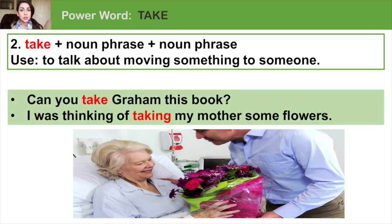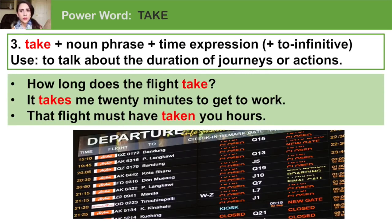In that case, we have to put the word 'to' in front of the person. So we could change it to: Can you take this book to Graham? Here's another example: I was thinking of taking my mother some flowers. My mother is the first noun phrase, and some flowers is the second noun phrase. The next grammar pattern is take plus a noun phrase plus a time expression.